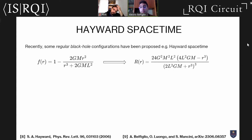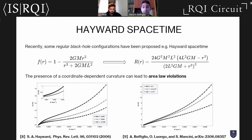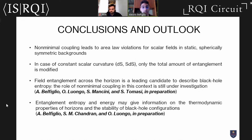In contrast, for the Hayward regular black hole spacetime proposed by Hayward in 2006, we can have violation of the area law, because the curvature is coordinate-dependent rather than constant. Area law can be violated due to the presence of a term that depends on the radial coordinate, and this violation occurs for sufficiently high values of the coupling constant — increasing the coupling constant produces a larger modification of the entanglement entropy scaling.